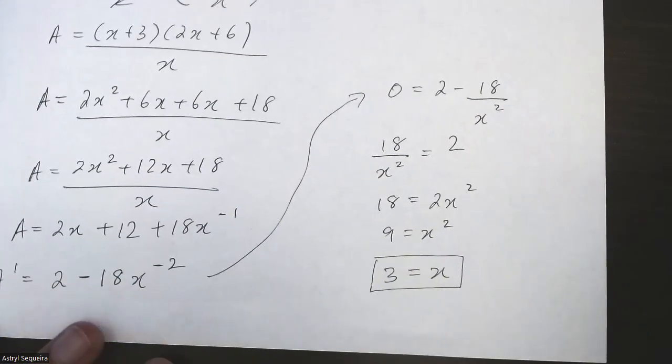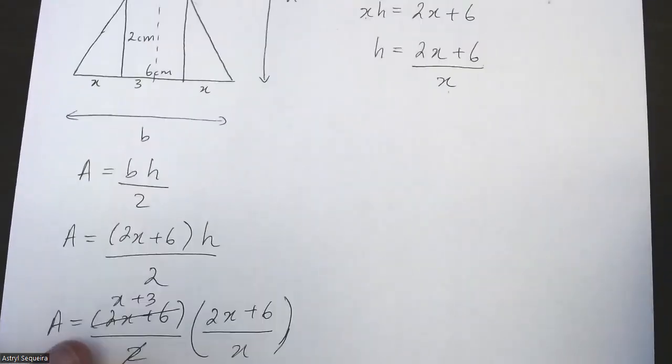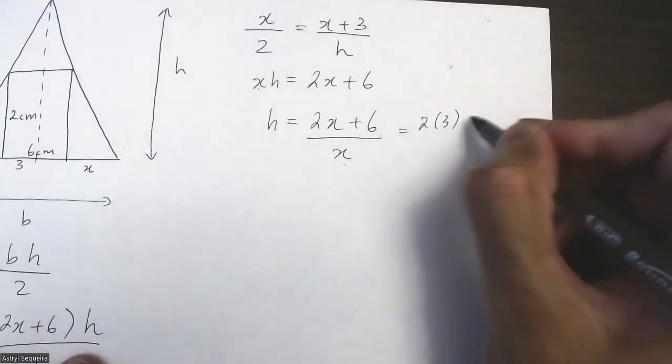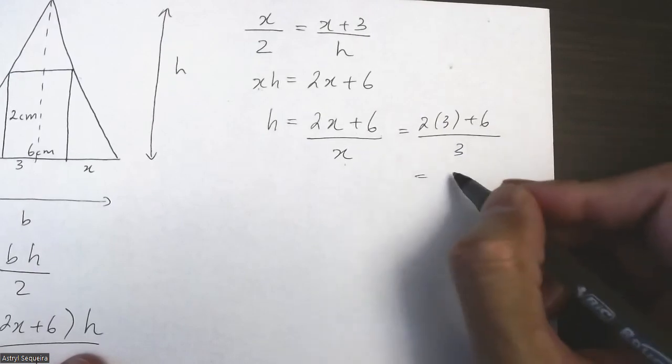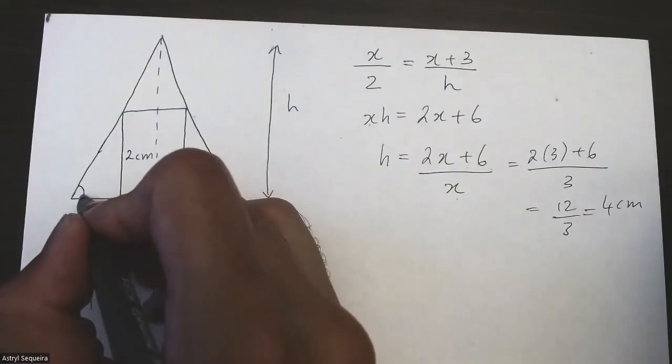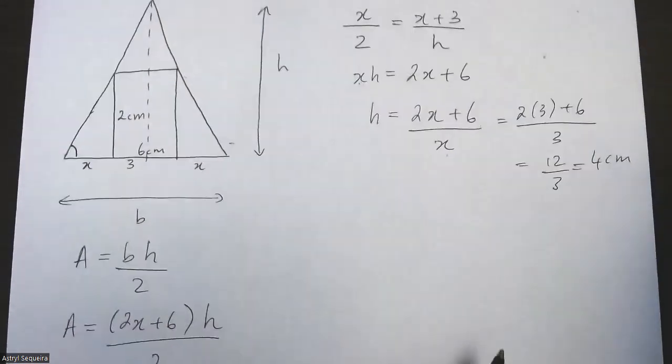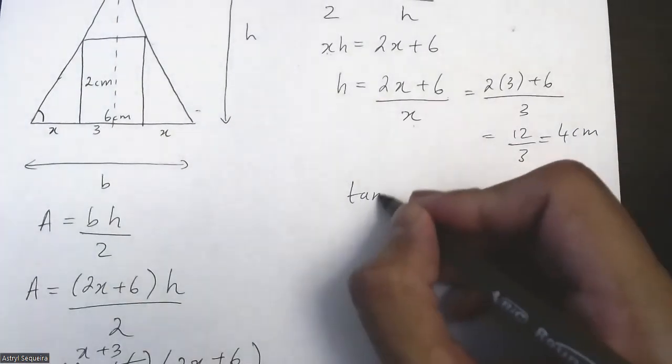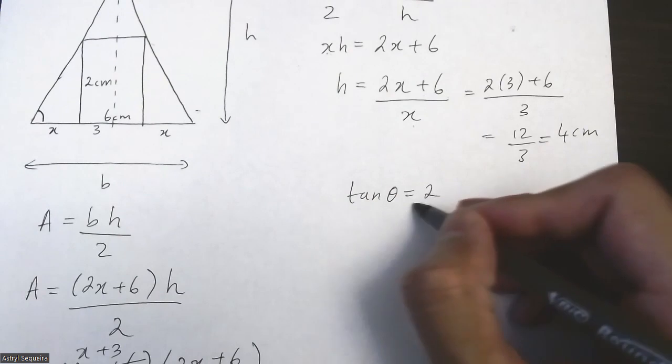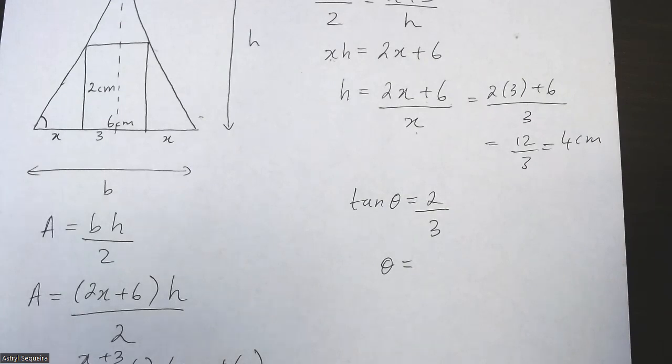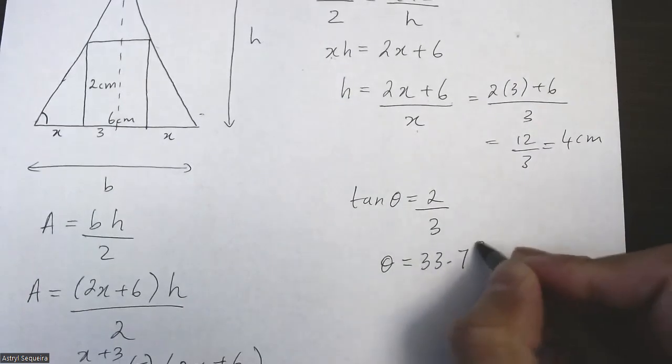X equals 3 is my solution. So now I need to find this angle over here. If you need to find the height also, you could just sub in 3 into this equation as well—you just get 12 over 3, which means the height would just be 4 centimeters. But the question asks us to find the base angle. The two base angles are the same, so in order to find the base angle, I'm going to use my small triangle here. So tan theta equals opposite over adjacent, and then if I do the tan inverse of this, I'll get the angle to be 33.7 degrees.